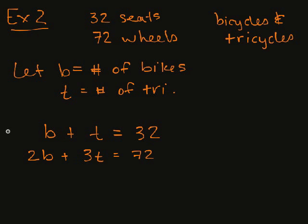Well, I'm going to go ahead and do it the same way. I'm going to do negative two times this guy and add them together. So negative 2b plus 2b cancels that out. Negative 2t plus 3t is t.